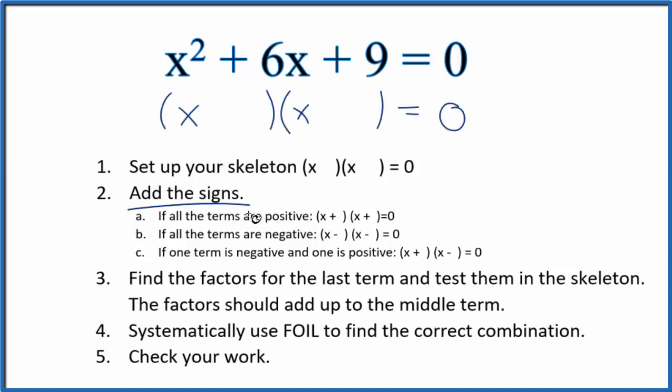Next, we're going to add the signs in. We see that these are both positive here. Since these are both positive, we're just going to have x plus something and then x plus something.